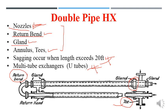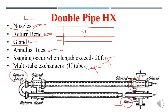The annulus is the space between the two pipes through which the hot or cold fluid flows. The inner pipes are connected with return bands. One important issue encountered in double pipe heat exchangers is sagging — the limit for pipe length is about 20 feet. If the hairpin length exceeds 20 feet, we can join pipes with return bands, but the weight of the pipe may cause it to sag.